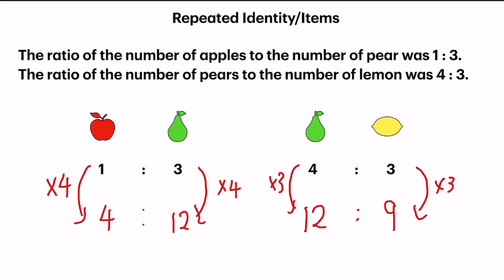So now we have our new ratio: apples 4 units, pear 12 units, and lemon 9 units.